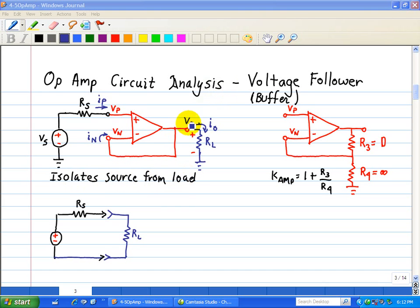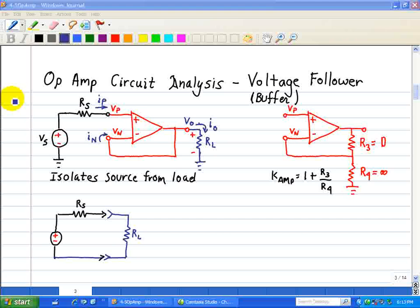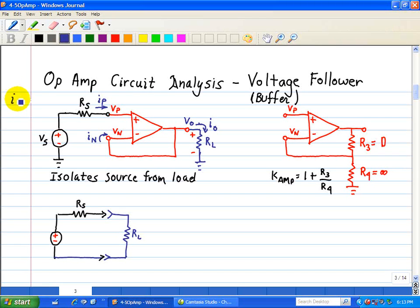So let's look at the relationship between VO and VS. First we note that there's no current going through IP, so there's no voltage drop across RS because in an ideal op-amp, IP is equal to IN, the current going through the inverting input is equal to 0. That's a result of the infinite input impedance of the op-amp.